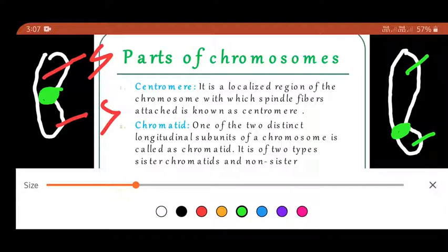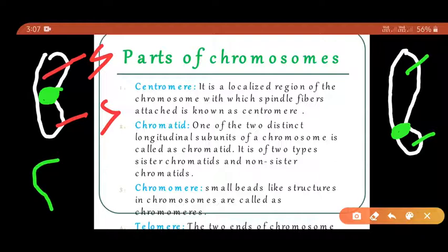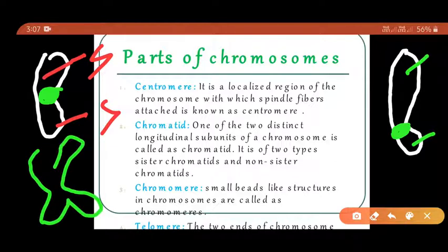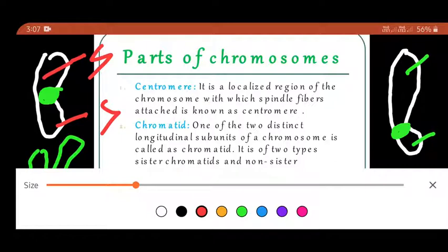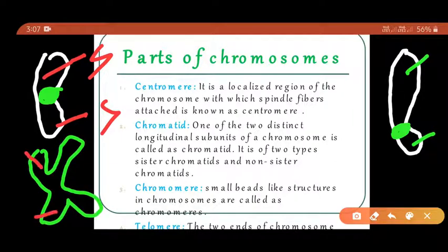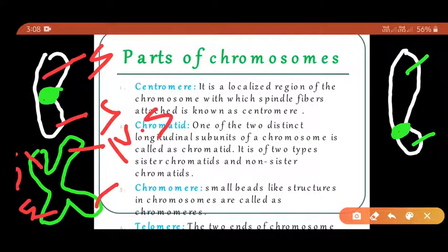There are two types of chromatids: sister chromatids and non-sister chromatids. Non-sister chromatids are seen during the phase of mitosis. Looking at the structure of the chromosome during the mitosis stage, you can see four chromatids — two of them are known as sister chromatids and the other two are known as non-sister chromatids.